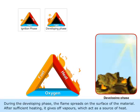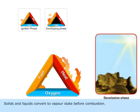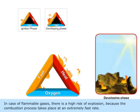Developing Phase. During the developing phase, the flame spreads on the surface of the material. After sufficient heating, it gives off vapors which act as the source of heat. Solids and liquids convert to vapor state before combustion. In case of flammable gases, there is a high risk of explosion because the combustion process takes place at an extremely fast rate.